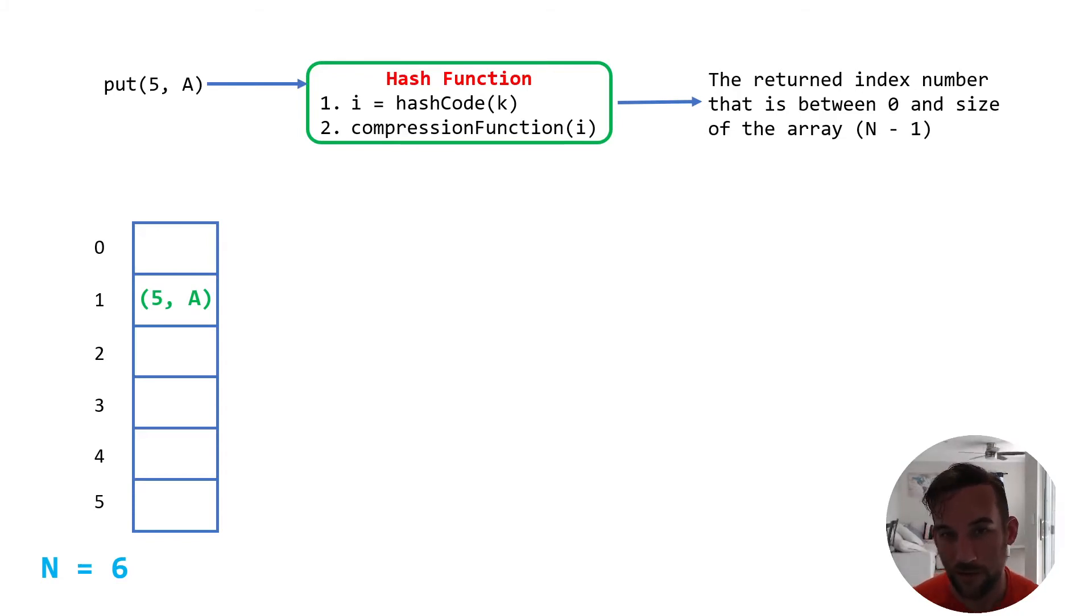Now let's say we have another key value pair we want to insert. In this case, it's 2, the key value pair 2b, and it just so happens, I don't know if this is correct or not, this is just an example to show you how to deal with the collision. So now let's say we insert the key value pair 2b, and the output after going through the hash code and the compression function is 1, is the integer. So that means that we now need to put this key value pair into the same index that's already occupied by the key value pair 5a.